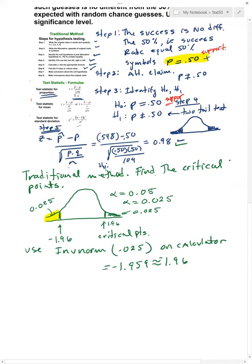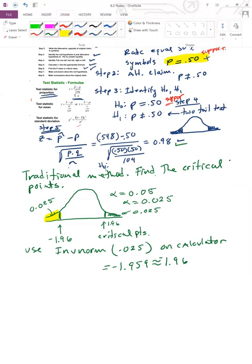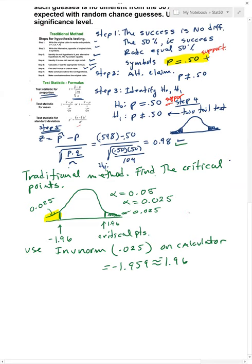Now my z-value, my test statistic was z equals 0.98. This middle part is the fail to reject region. Therefore, my z-value lands in here. Since my z-value lands on the fail to reject region, I fail to reject the null.